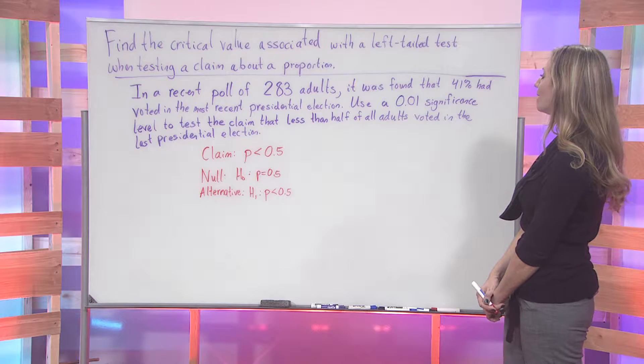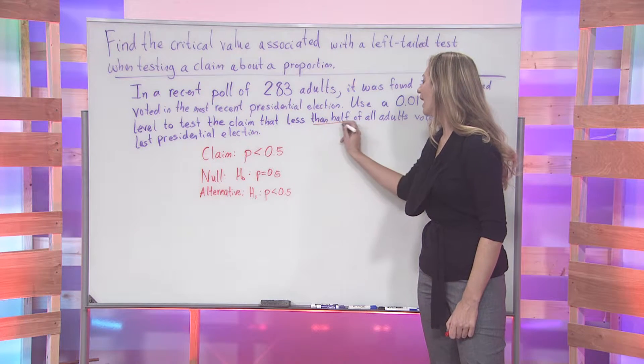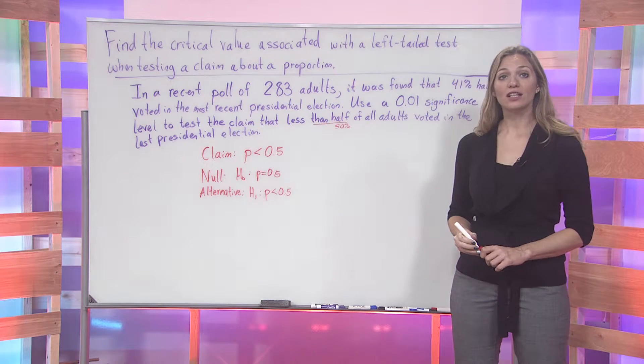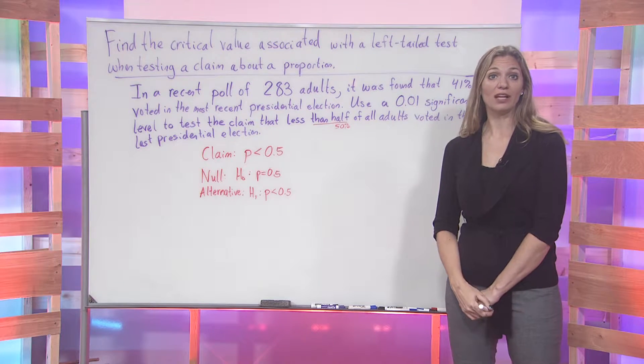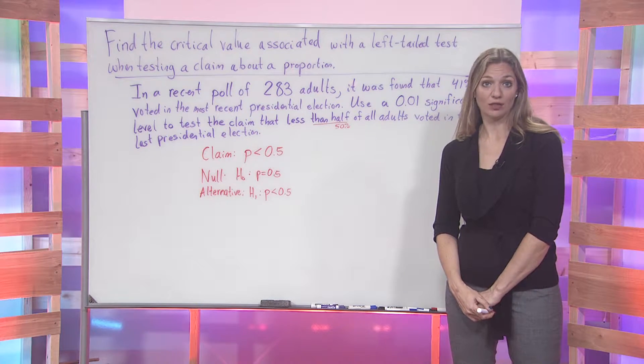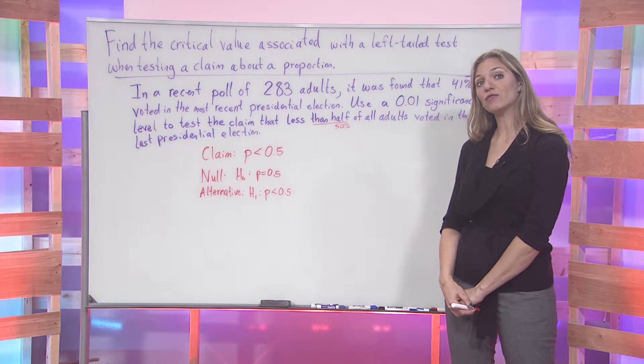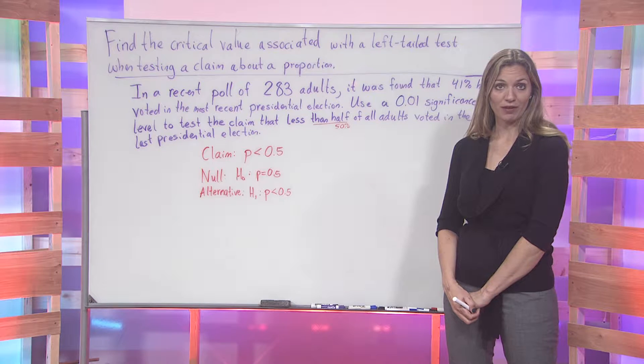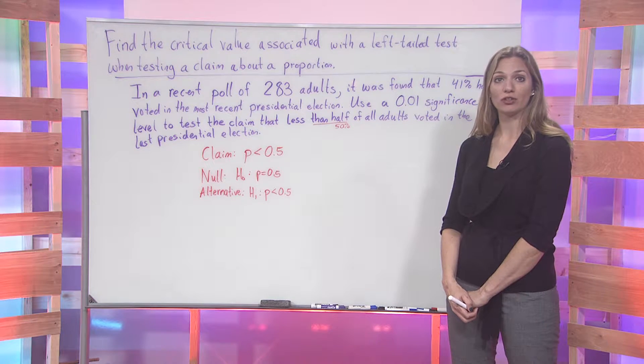Since we are looking at less than half, half is equivalent to 50%. This is what allowed us to find our original claim, p being less than 0.5. This led us to find our null hypothesis, the equality case, p equals 0.5, as well as our alternative.